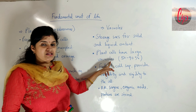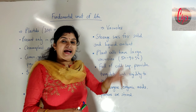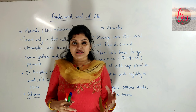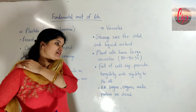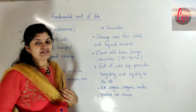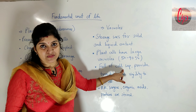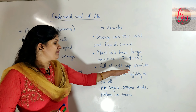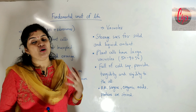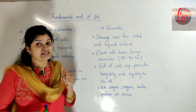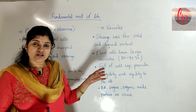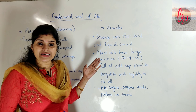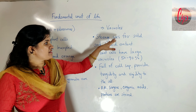Plant cells have large vacuoles — around 50 to 90 percent of the space in plant cells is occupied by vacuoles. The vacuoles are full of cell sap and they provide turgidity and rigidity to the cell. Because of the vacuoles, plant cells are turgid and rigid, making this a very important function of vacuoles.